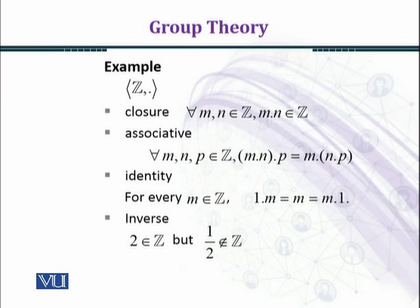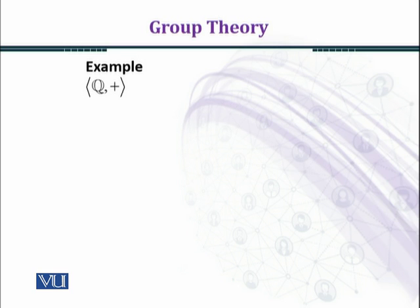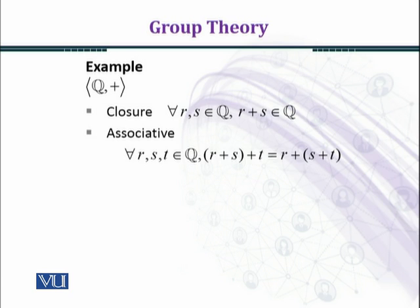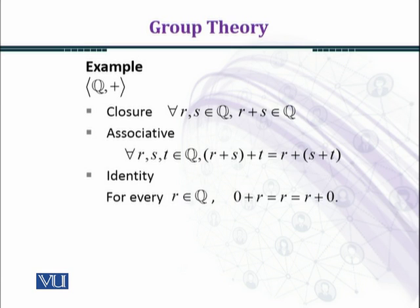Now we consider the set of rational numbers, denoted by Q, and we want to see whether Q forms a group under the binary operation addition. First, we check the closure property. We choose two arbitrary rational numbers R and S belonging to Q. When you add two rational numbers, the answer is always a rational number, so the closure property is satisfied. Similarly, the associative property is also satisfied, because every rational number is a real number and associative property holds for real numbers.